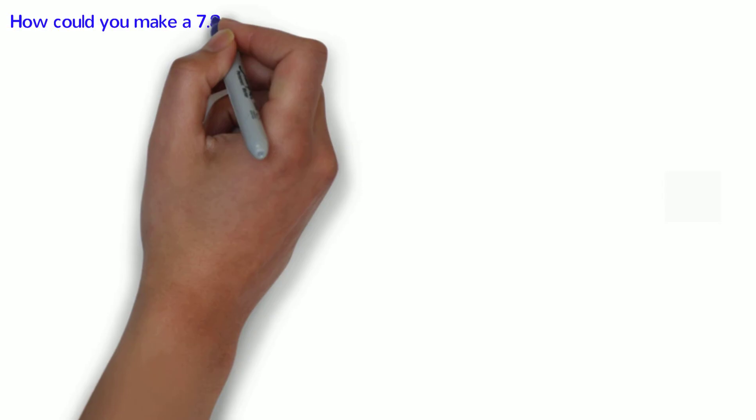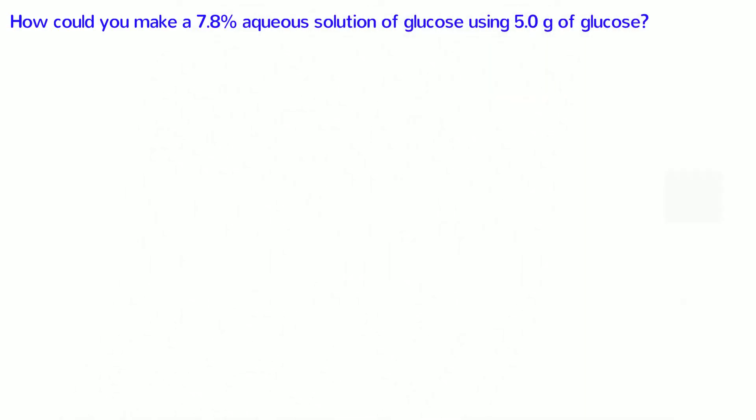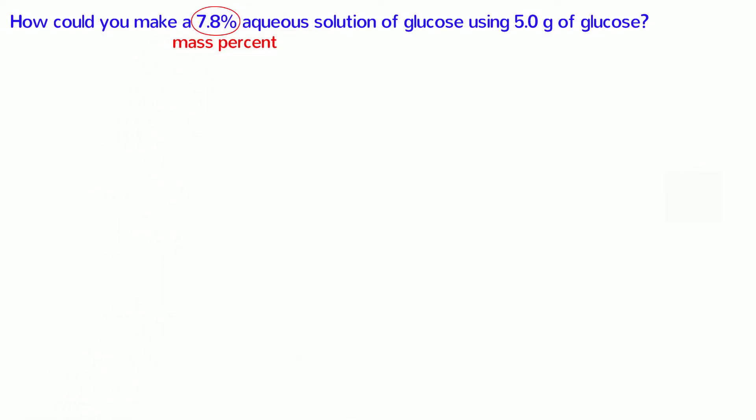Okay, let's try one last problem. How could you make a 7.8% aqueous solution of glucose using 5.0 grams of glucose? Like always, let's first identify the knowns and the unknowns in the problem. 7.8% is the mass percent concentration of the solution we want to make, and 5 grams is the mass of the solute we need to use. The question doesn't specifically say what we're solving for, but we can infer it from what is missing.